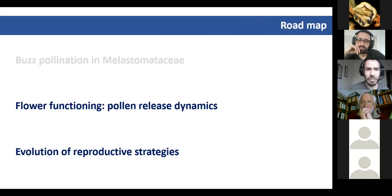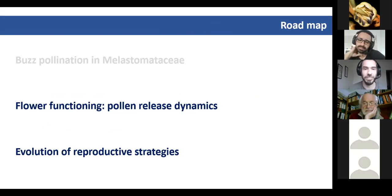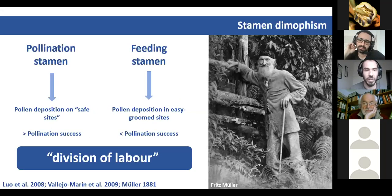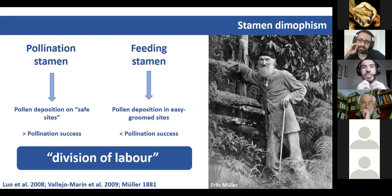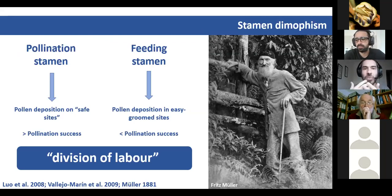This should put higher pressure on melastomes and should also affect flower functioning. I'm going to talk about a couple of studies concerning pollen release dynamics. One of the most common features of buzz-pollinated flowers is the presence of two sets of different stamens — long stamens and short stamens — and they are supposed to have different functions within the same flower.